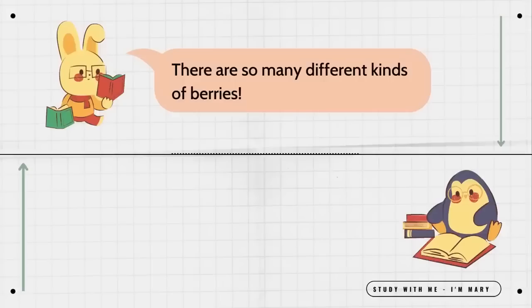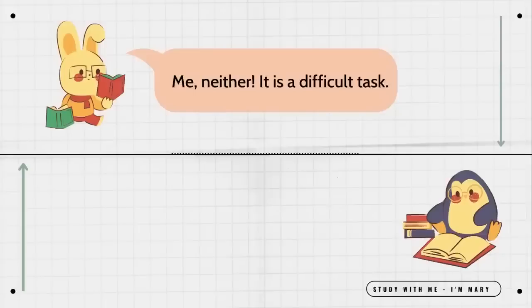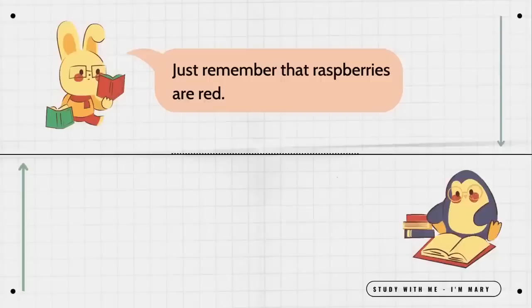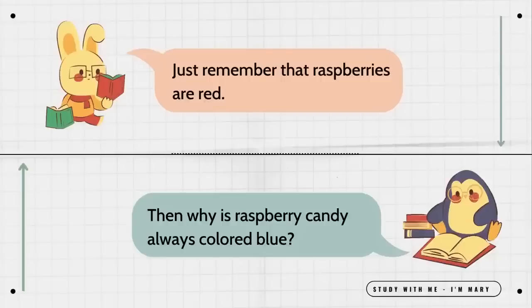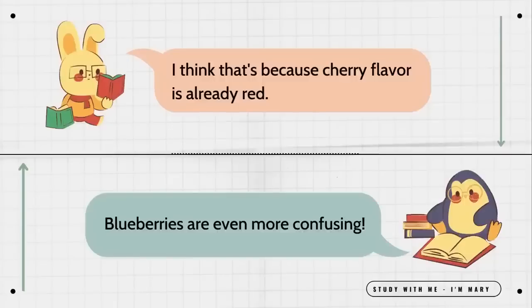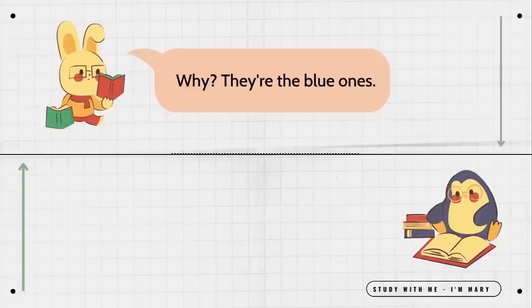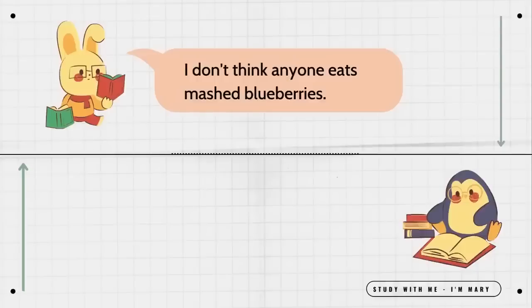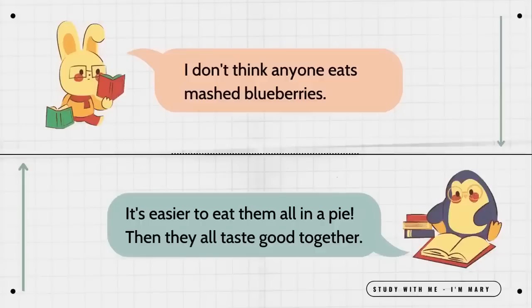There are so many different kinds of berries. I can't tell some of them apart. Me neither. It is a difficult task. Raspberries and blackberries have the same shape. Just remember that raspberries are red. Then why is raspberry candy always colored blue? I think that's because cherry flavor is already red. Blueberries are even more confusing. Why? They're the blue ones. Well, when you mash them, they look purple. I don't think anyone eats mashed blueberries. It's easier to eat them all in a pie. Then they all taste good together.